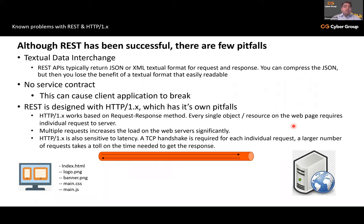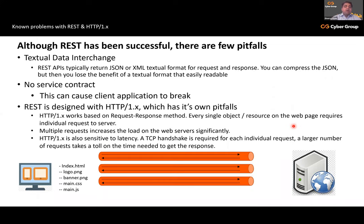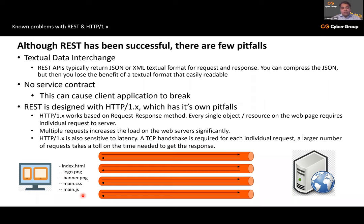REST is designed with HTTP 1.x in mind, which means every single resource on the web requires an individual request to the server. Multiple requests significantly stress the web server. HTTP 1.x is also very sensitive to latency — a TCP handshake and connection must be made for each individual request. A large number of requests can take a toll on the server. For example, loading a webpage requires index.html, a logo, banner, CSS, and a JS file — each creating its own request and TCP connection, making communication sequential between client and server.